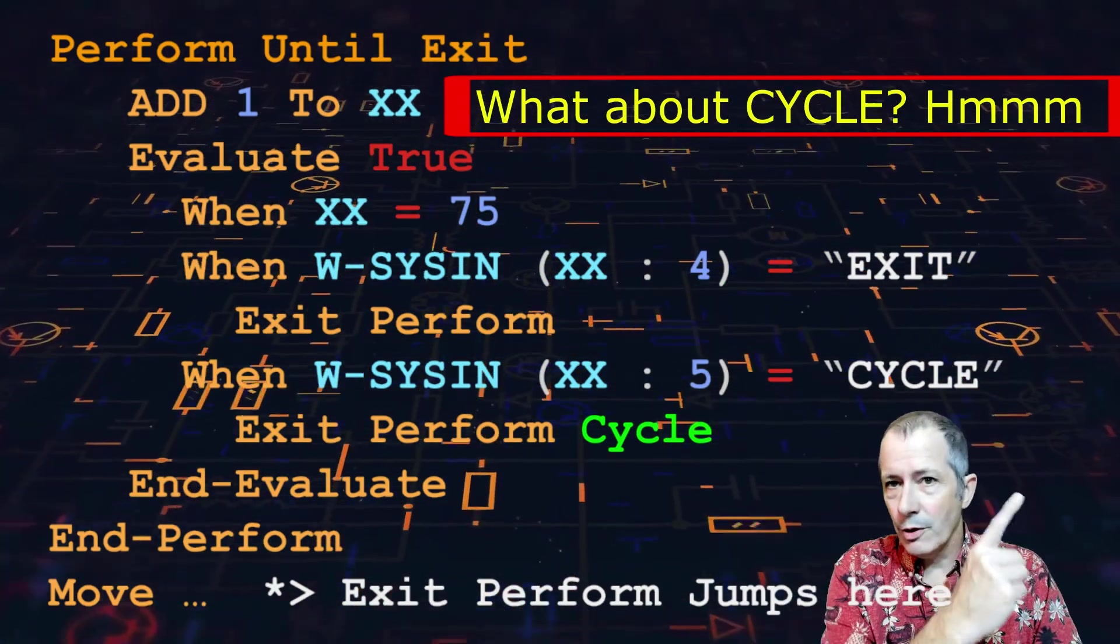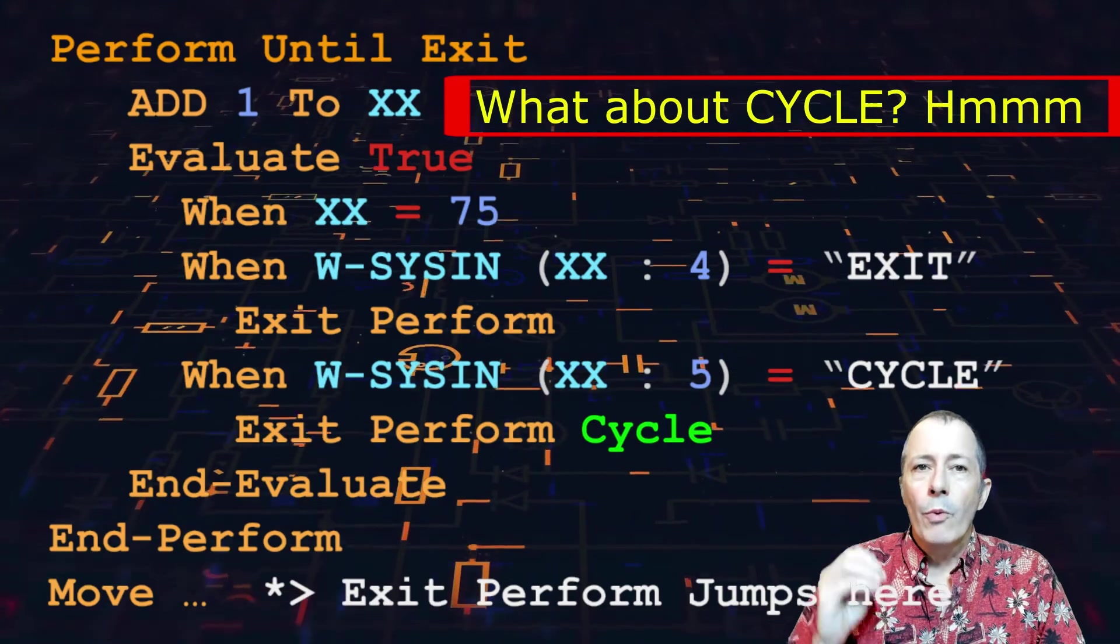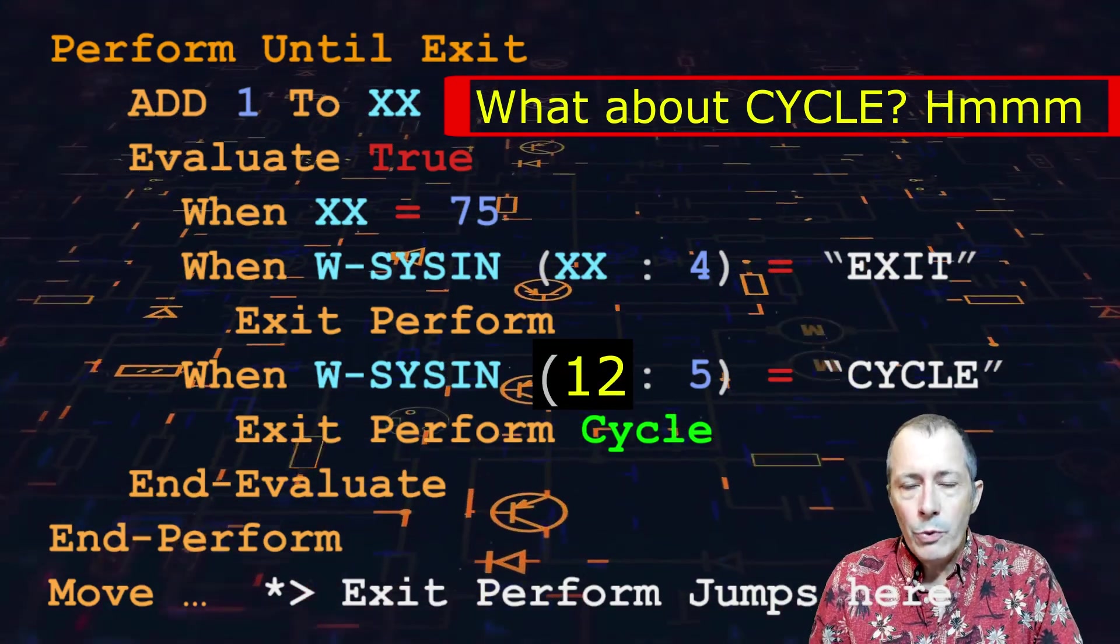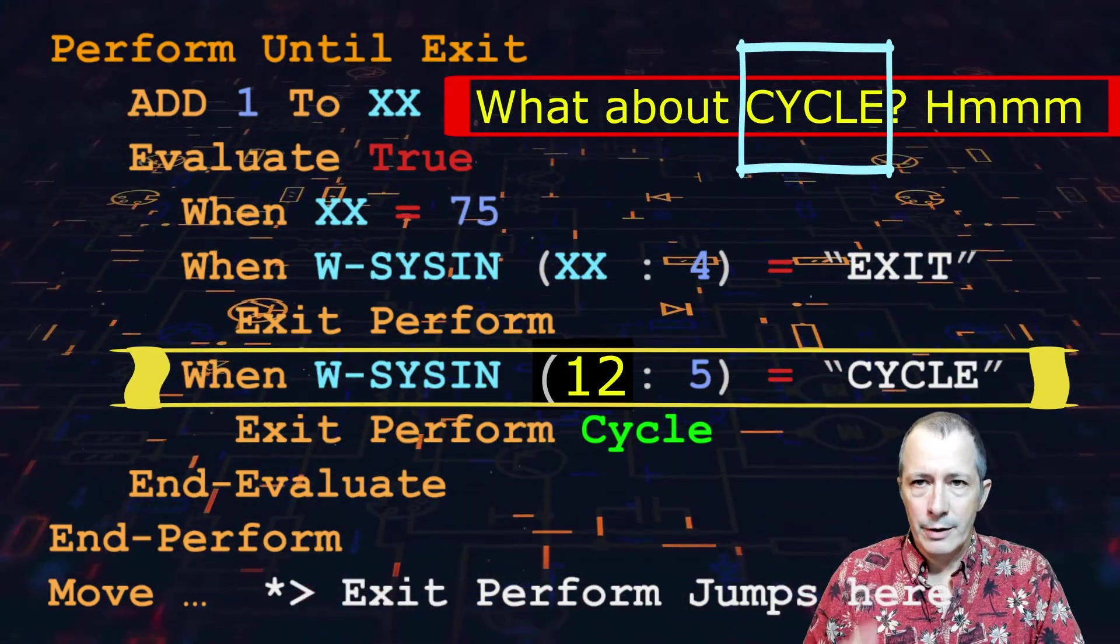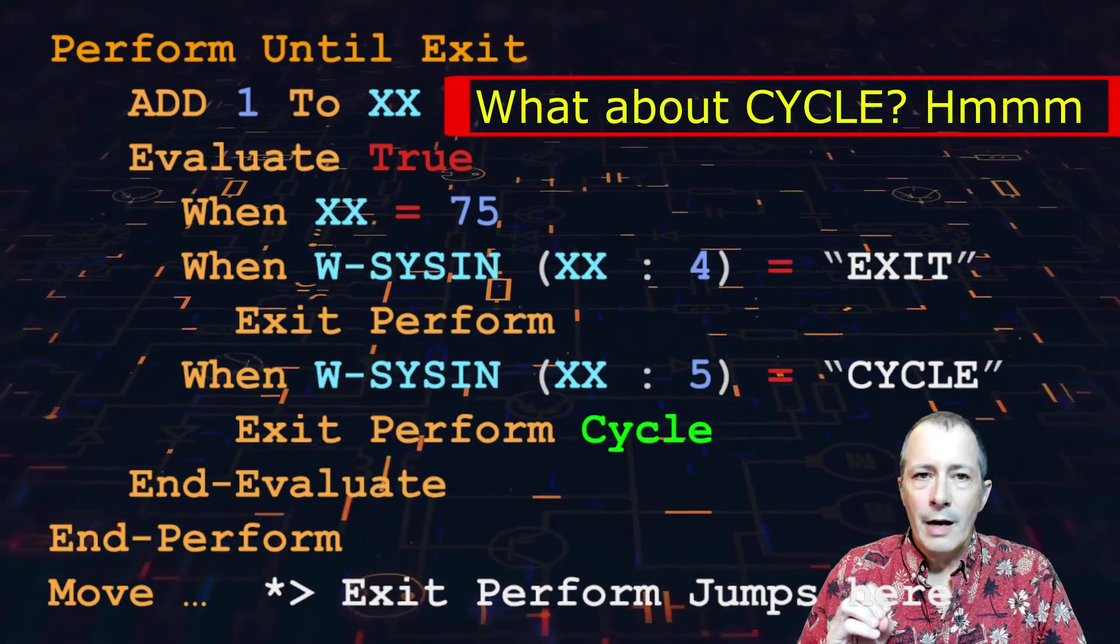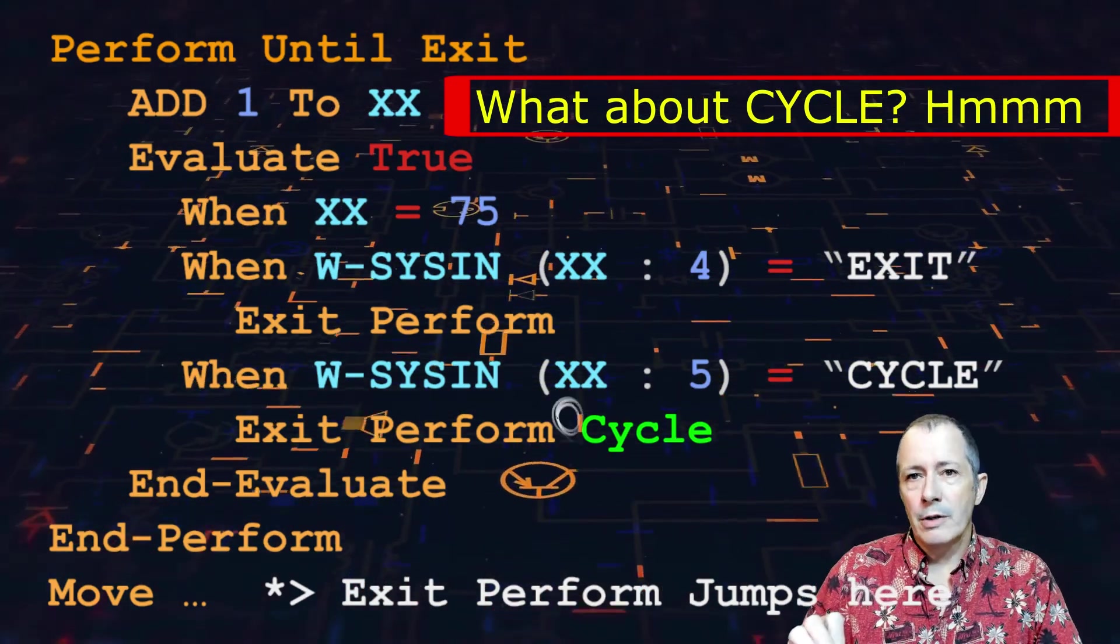What about cycle? Notice the record tag. When xx has a value of 12, the third when is true. Thus, the exit perform cycle is executed.